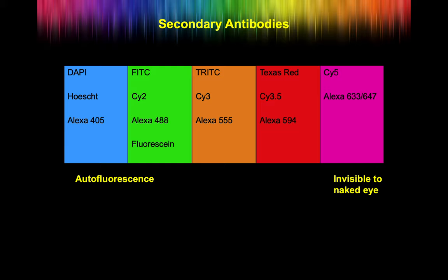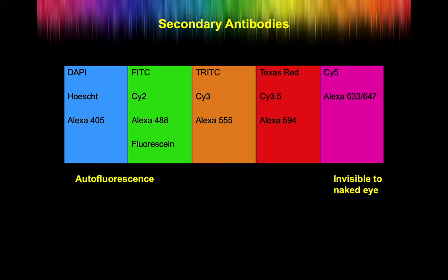When choosing secondary antibodies, be careful about which dyes you use. We traditionally think of dyes like FITC or TRITC, and everyone knows what colour those are. But FITC is 100 years old — it's not that bright and not that stable. Consider moving to dyes like Alexa 488, which has exactly the same spectral properties as FITC but is newer and much better. Don't stick to old dyes like FITC and TRITC — move to the Alexa dyes. It doesn't cost any more; you're just going to benefit.